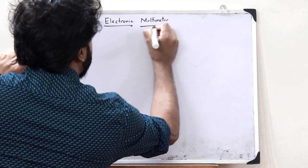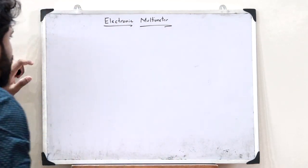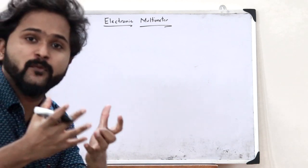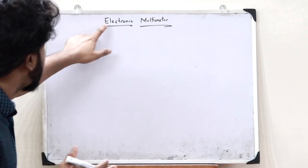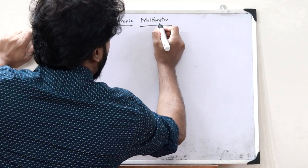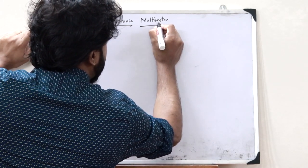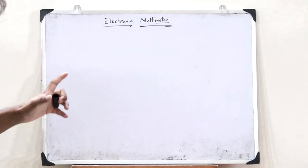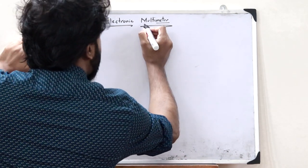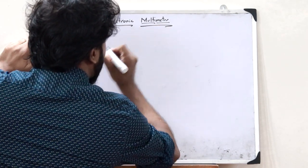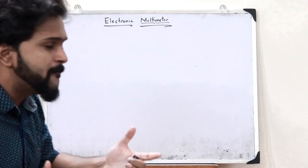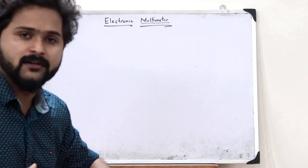Electronic multimeters — just like the name suggests, this is an electronic device that is used for the purpose of measuring something. The term 'meter' here signifies measurement, and 'multi' means that multiple quantities can be measured with the help of a multimeter.